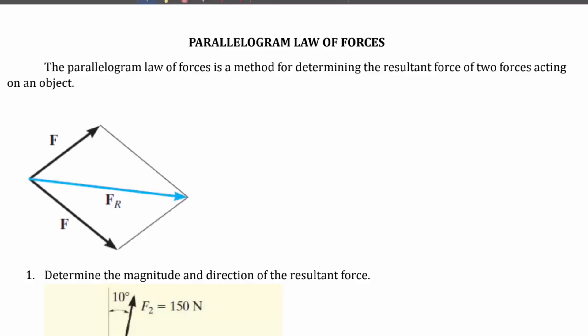The parallelogram law is used to calculate the resultant force for any two forces acting on an object. The two forces should be concurrent, meaning that the two forces should be acting from a single point. Here I have considered two forces — let us call this F1 and this F2 — and if F1 and F2 are acting with some magnitude, there will be a resultant force acting at the center.